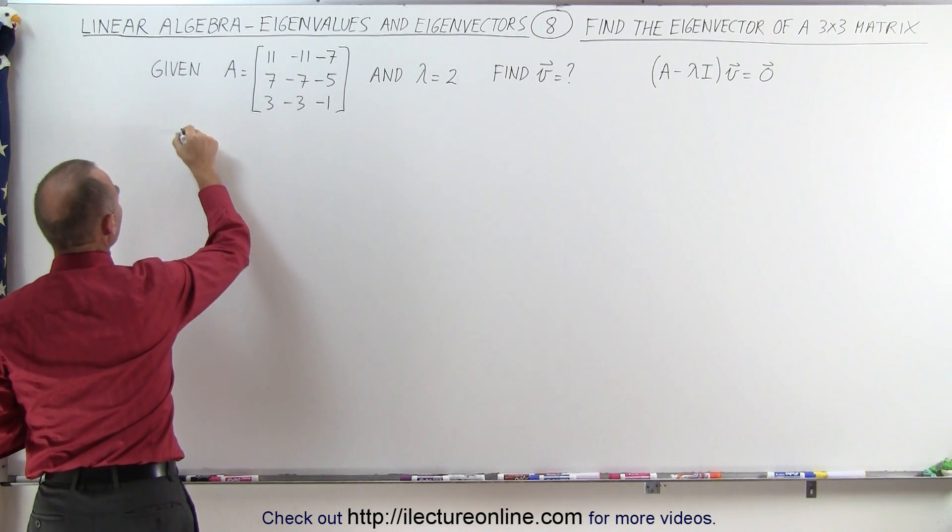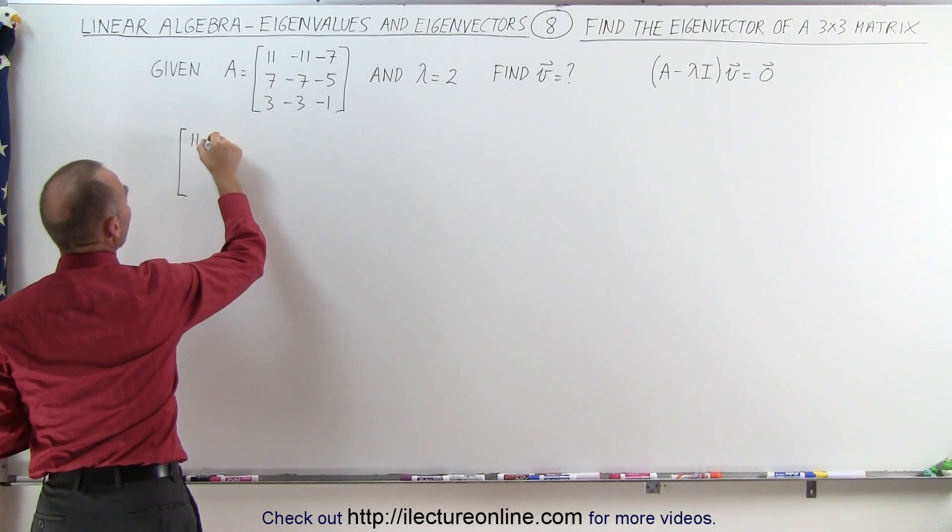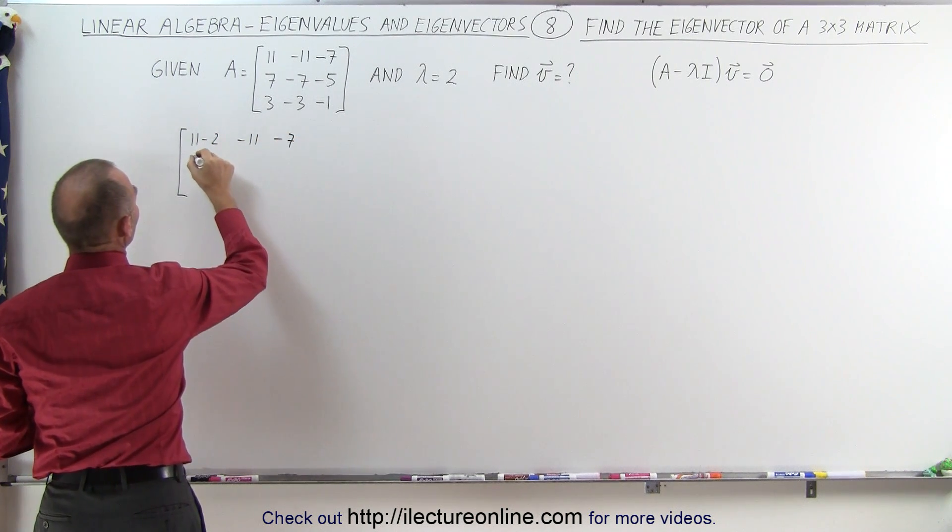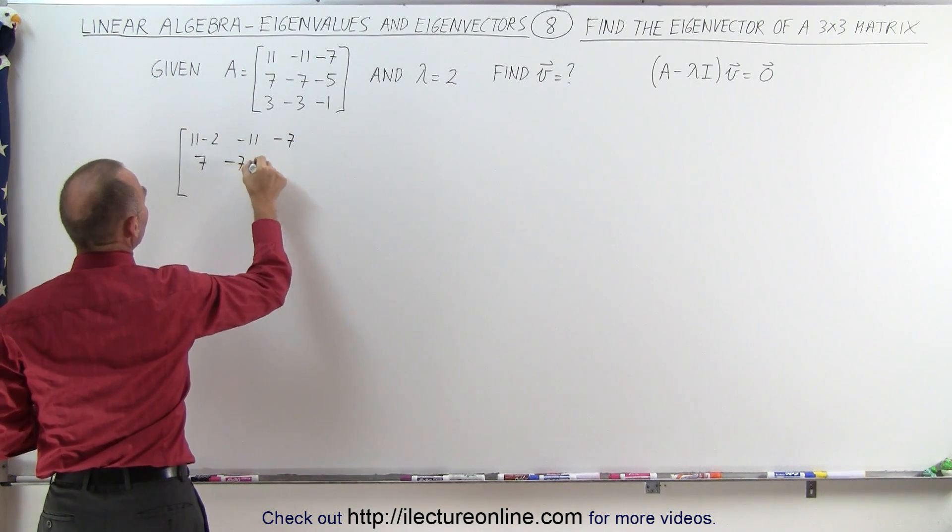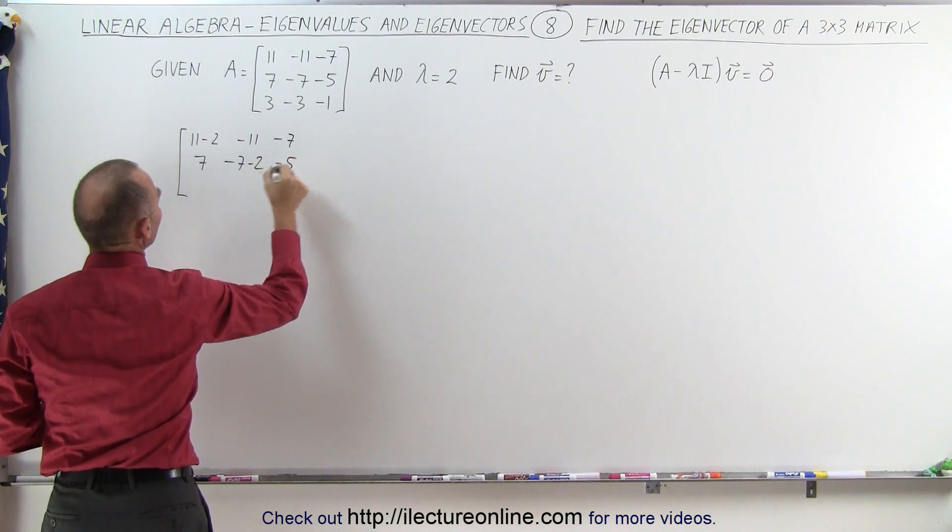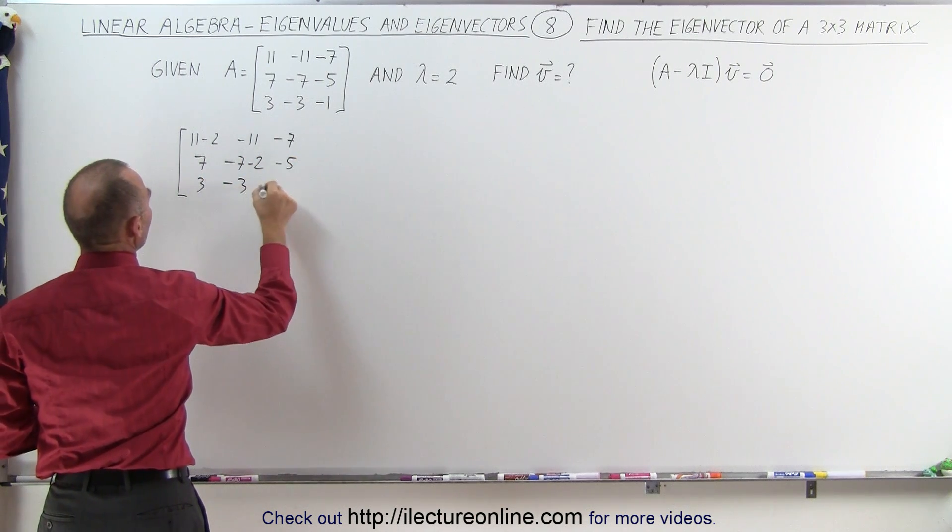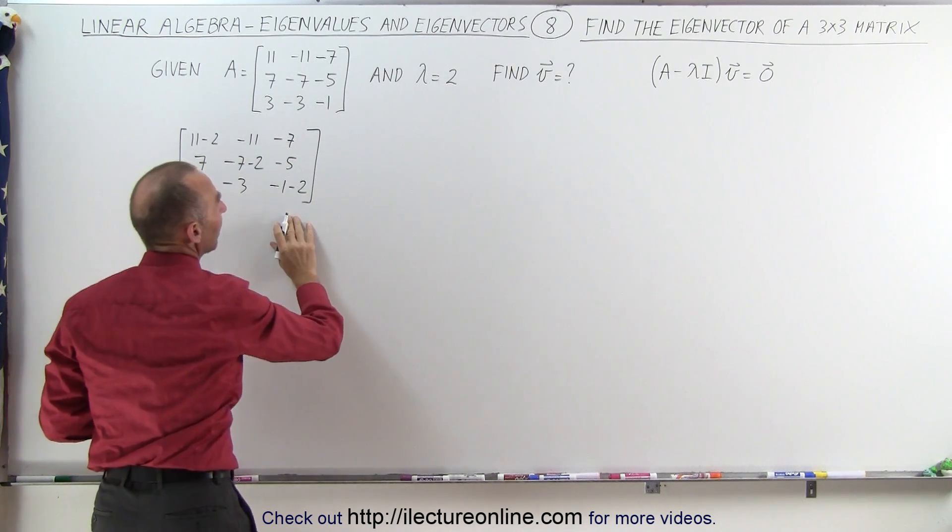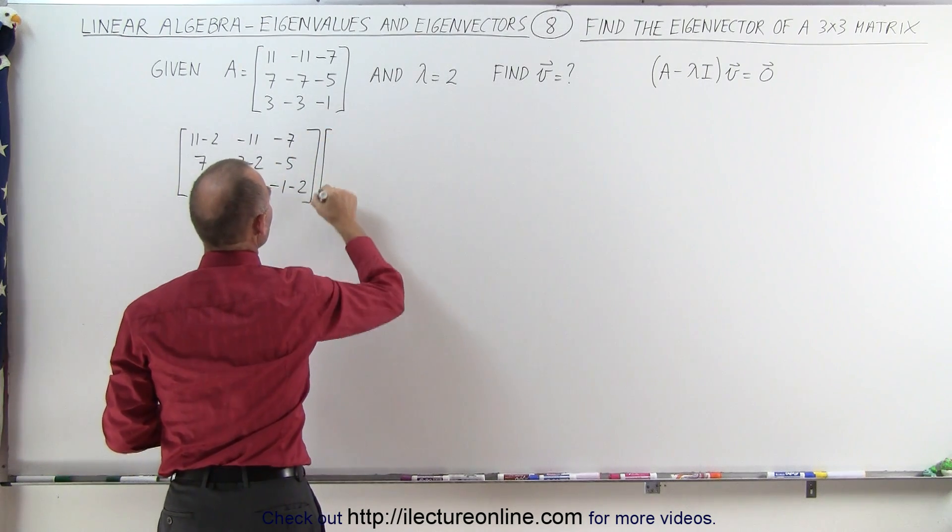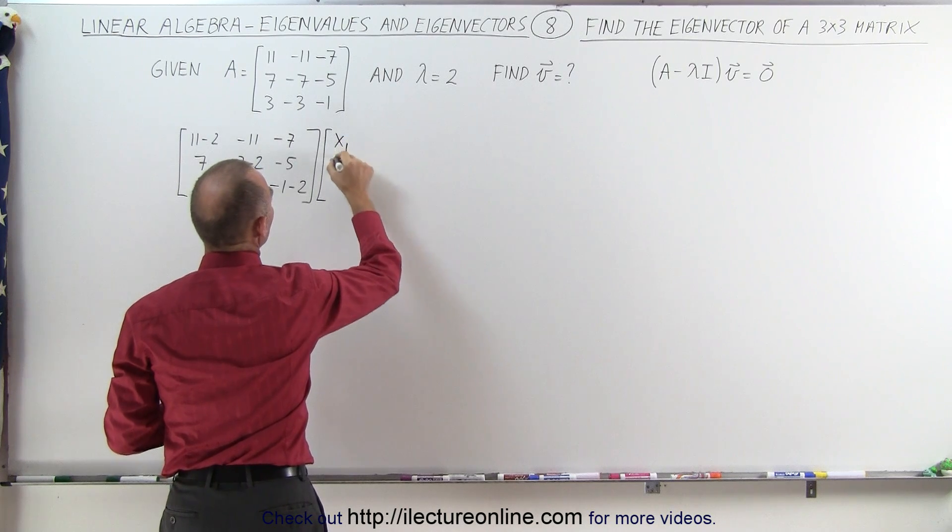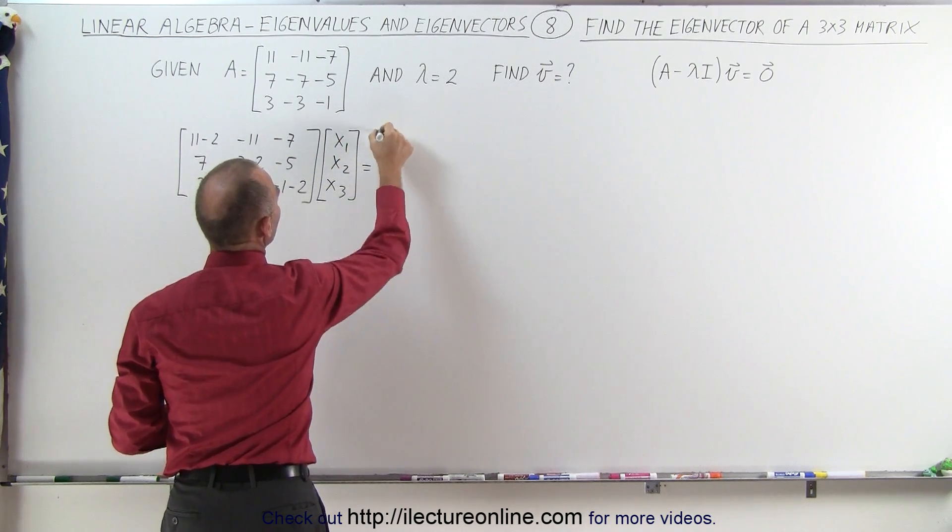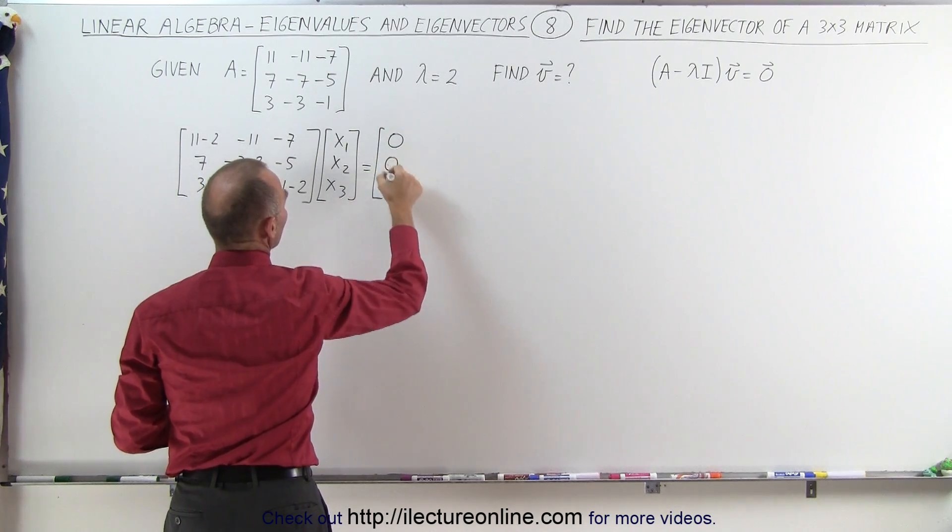So that gives us the following, we end up with 11 minus 2 minus 11 minus 7. We have 7 minus 7 minus 2 and a minus 5 and 3 minus 3 and a minus 1 minus 2. And then we take the whole thing and multiply it times the eigenvector X1, X2, X3 and that should then give us the null vector 0, 0, 0.